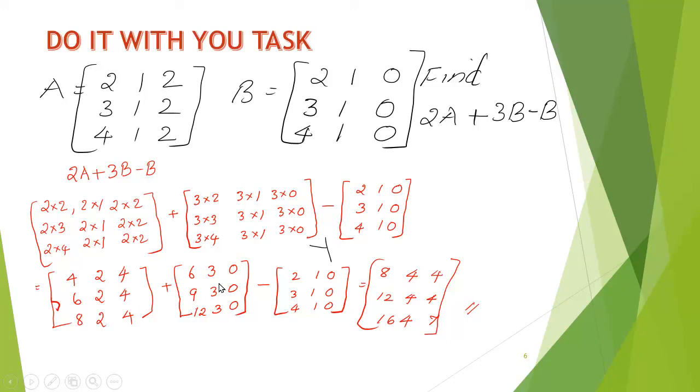So, the final answer is 4, 2, 4, 6, 2, 4, 8, 2, 4, plus 6, 3, 0, 9, 3, 0, 12, 3, 0, minus 2, 1, 0, 3, 1, 0, 4, 1, 0.